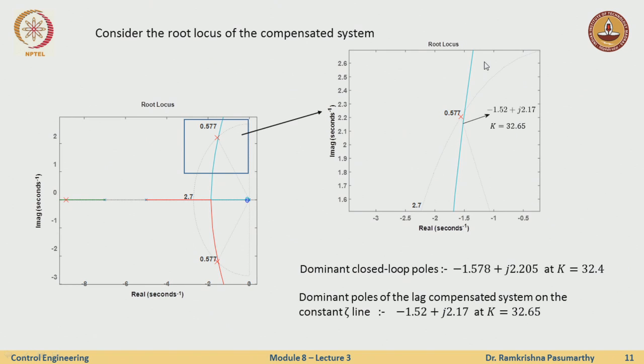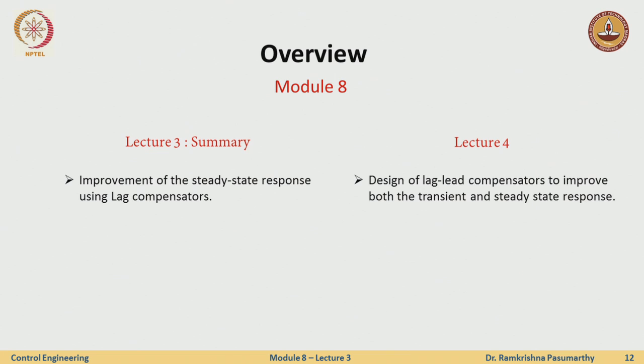This is the basic design procedure for a lag compensator. We have seen how lag compensators help improve the steady state response in terms of steady state error. In the next lecture, we will see how to handle a system where neither the transient specifications nor the steady state performance requirements are met, requiring a combination of both lead and lag compensators, and the corresponding design procedure.